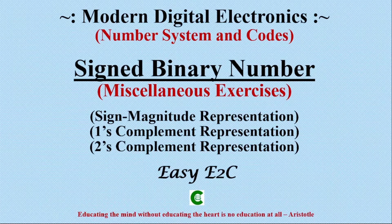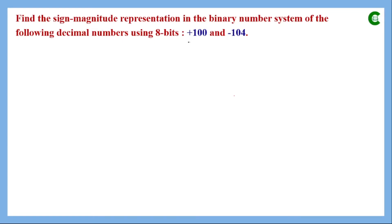Welcome to the lecture series on number systems. In our previous class we learned the three techniques of representation for a signed binary number. In today's class we will solve a few more exercises to have a better idea of those techniques. First we will represent plus 100 and minus 104 — given in decimal — in binary using sign-magnitude representation with 8 bits.